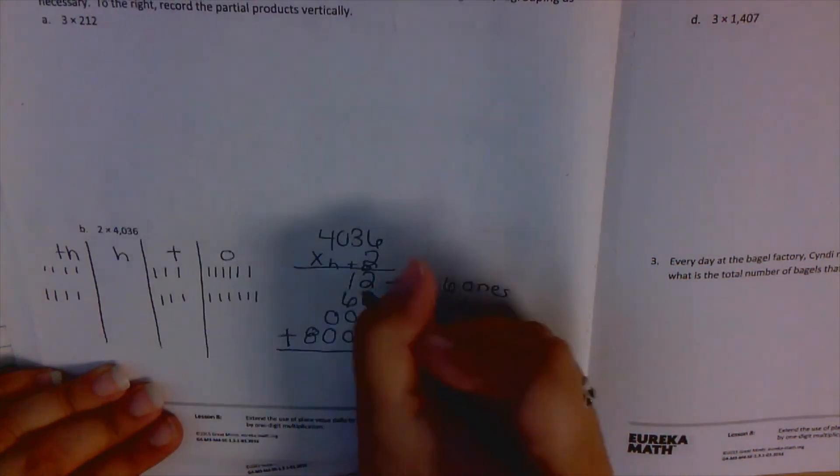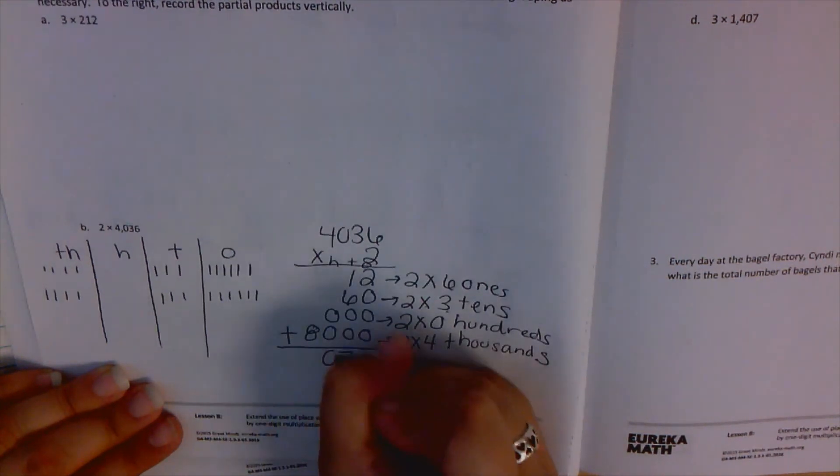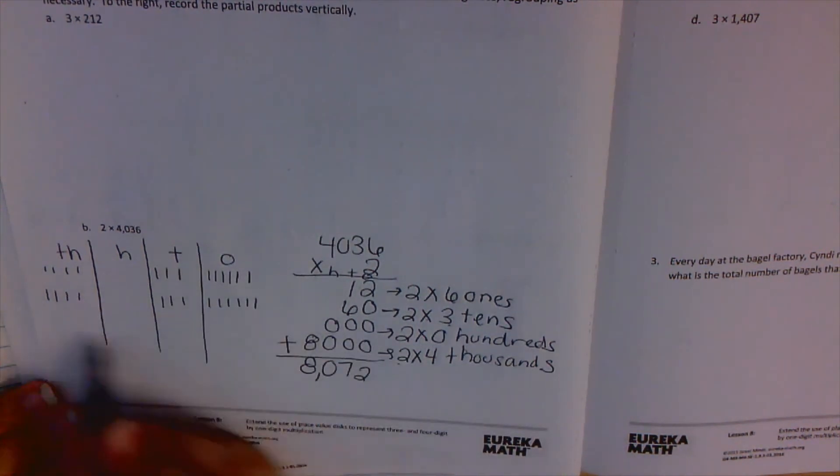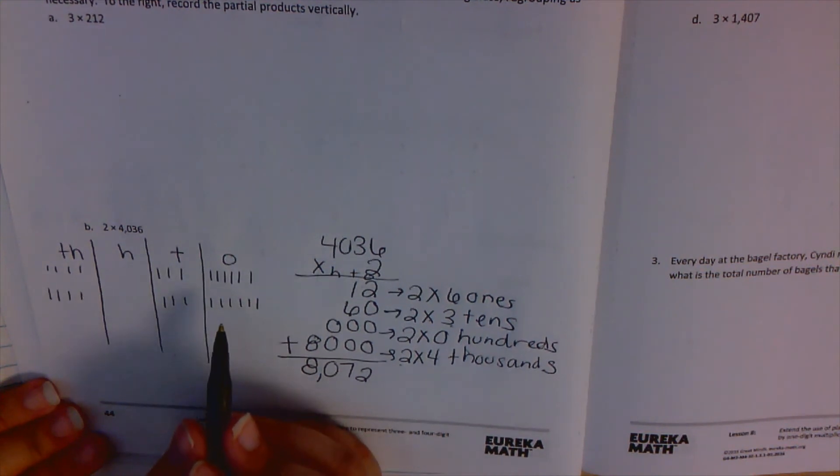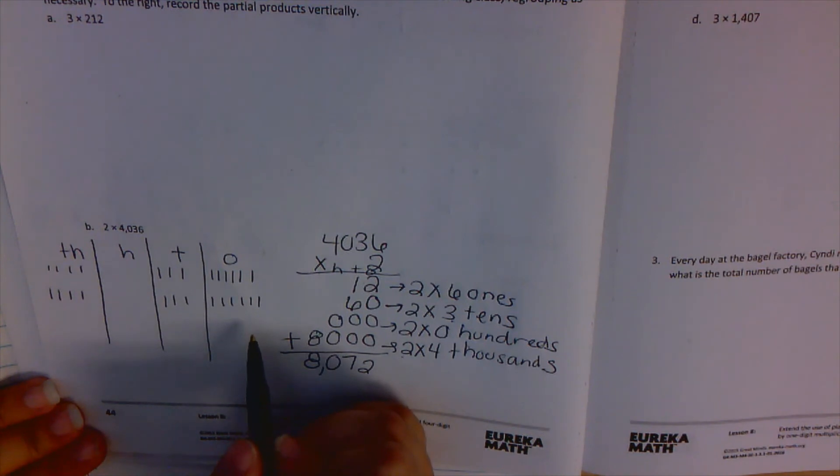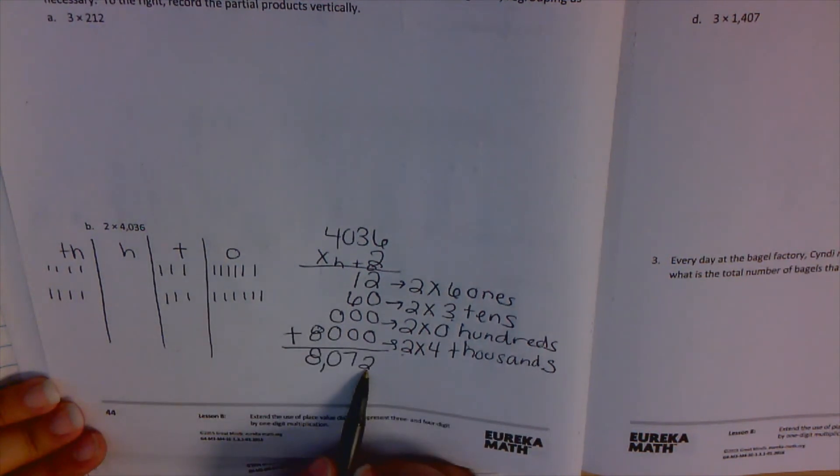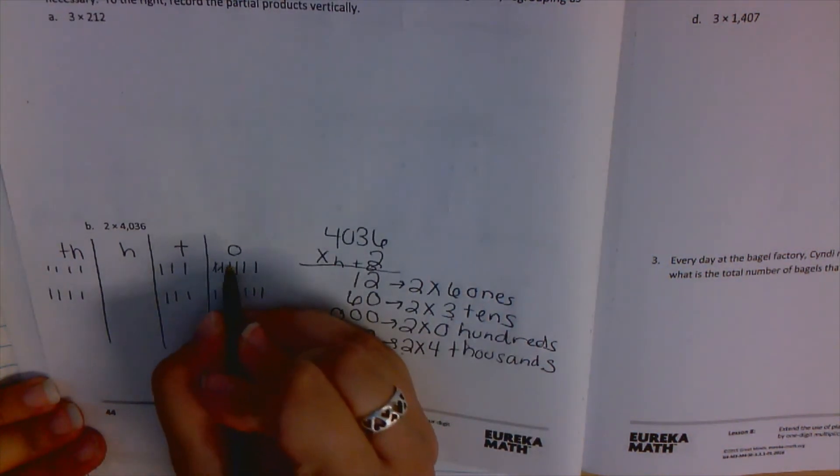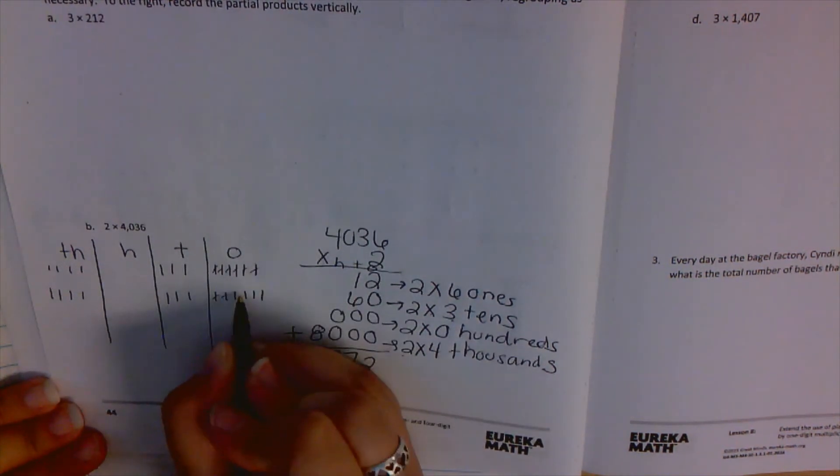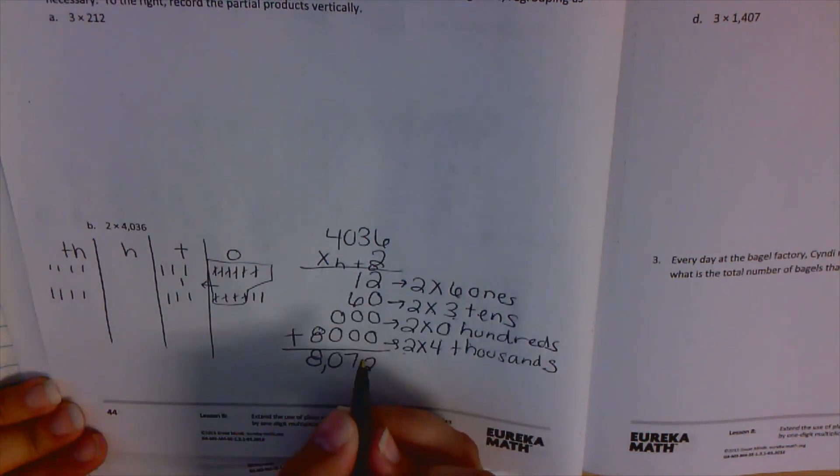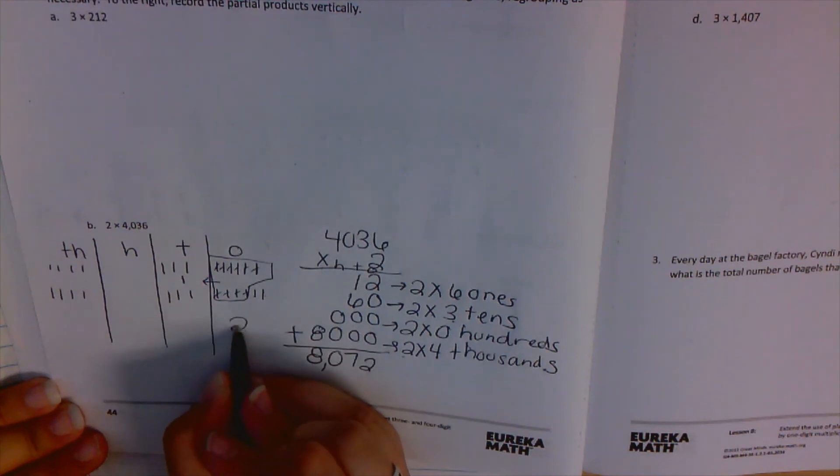Adding this together, we have 2, 7, 0, 8: 8,072. And if I were to regroup here our disks as needed, because I can see there is way more than 10 in the ones value place, and here it's saying I should have a 2. Well let's regroup and see what happens. So 1, 2, 3, 4, 5, 6, 7, 8, 9, 10. That group of 10 needs to be put in the proper place value, the tens place. Leaving me with 2 in the ones place.